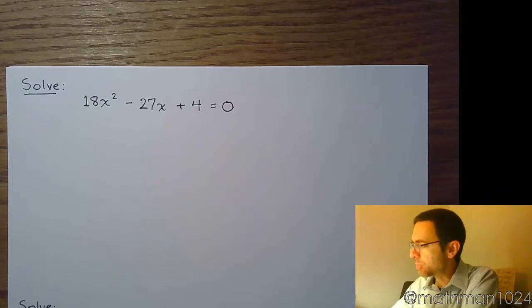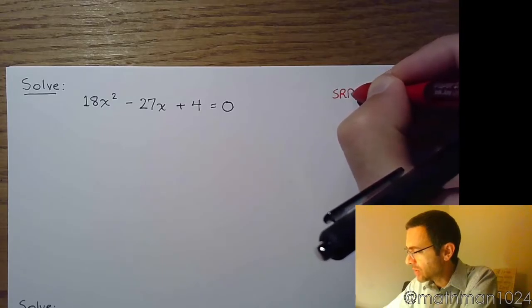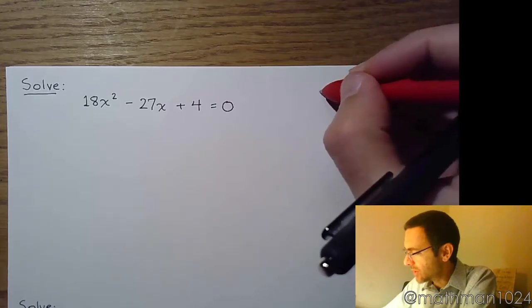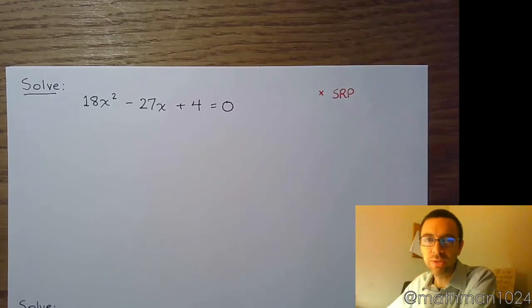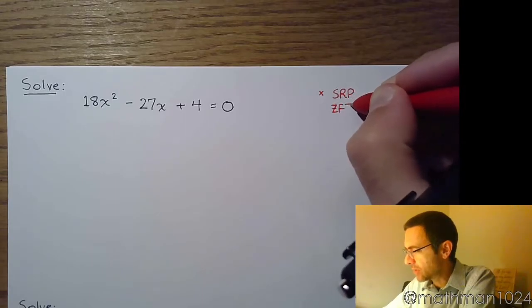So let's go through our progression to see what's going to be the best method to use. Can I use the square root property? I've got x squared and x, so this is not the best thing for us. What about the zero factor theorem? Can we factor this?